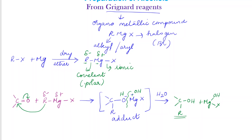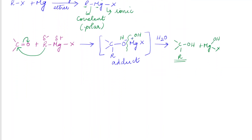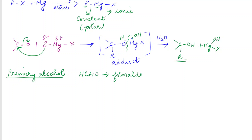Now let us consider how to prepare primary, secondary, and tertiary alcohol using this Grignard reagent from a carbonyl compound. First, we will prepare primary alcohol. For the preparation of primary alcohol from Grignard reagent, we need formaldehyde, also called methanal. Formaldehyde on treatment with the Grignard reagent results in the formation of a primary alcohol.